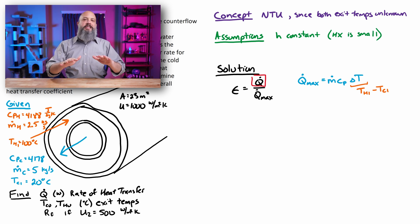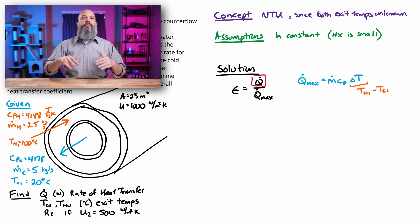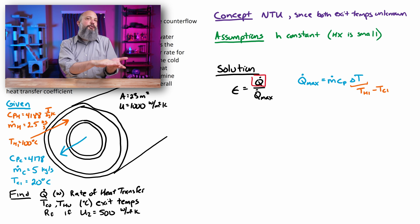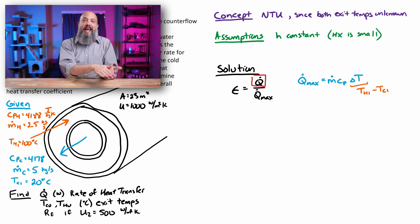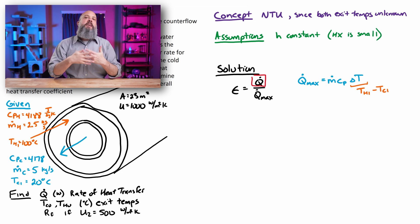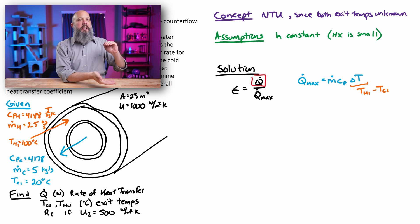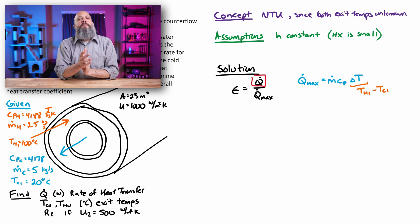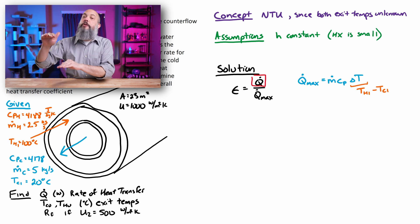Imagine the cold flow stayed at exactly the same temperature — say 20 degrees never changed. Then the maximum drop for the hot flow at 100 degrees would be 80 degrees; it could only go from 100 down to 20, never below the cold temperature. Similarly, if the hot temperature always stayed at 100, the cold flow could only rise up to 100. So T_hot_in minus T_cold_in means the hot can only go as low as the cold, and the cold can only rise to the hot — giving a maximum change of 80 degrees for either flow.